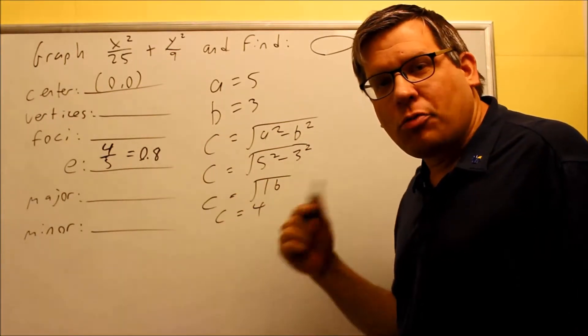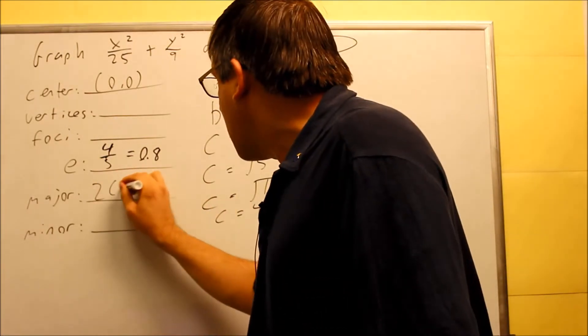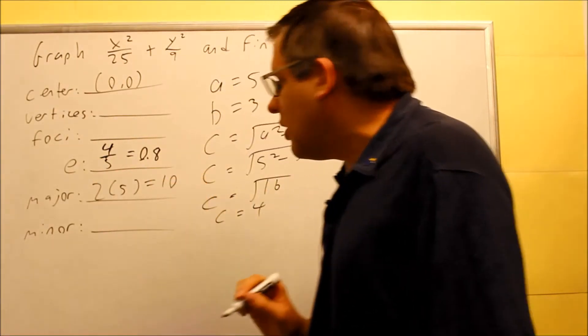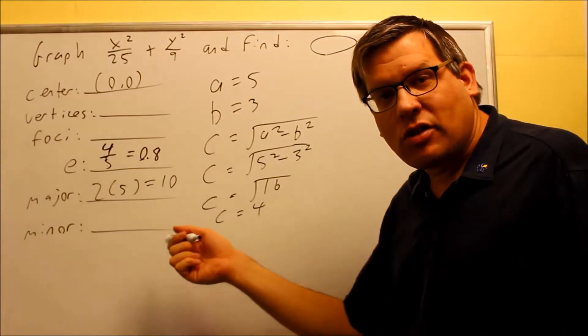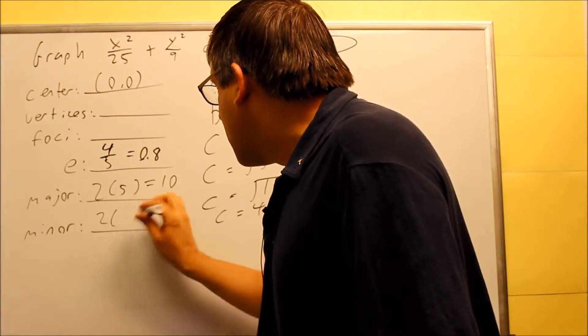The major axis, the formula for that, is 2 times a. So in this case, I have 2 times 5, which is 10. The minor axis, this is the length of the minor axis, would be 2 times b, so 2 times 3 is going to be 6.